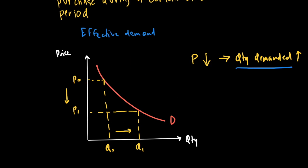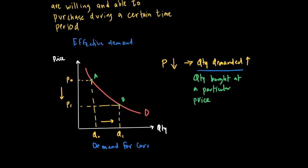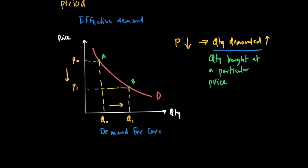This is the demand curve of the good — it shows the demand for cars. But when I say quantity demanded, I mean the quantity bought at a particular price. So if I want to know the quantity bought at price P0, the answer is Q0. I can't say it's the demand for the good — I say it's the quantity demanded. Similarly, at P1, the quantity demanded is Q1. But altogether, this is your total demand, or the demand for cars.